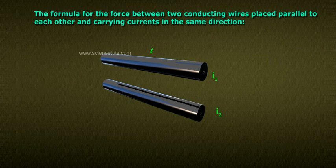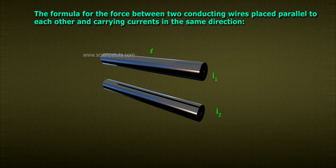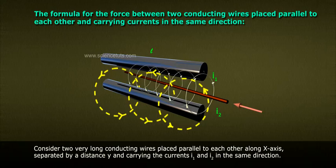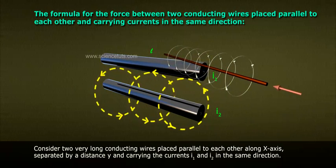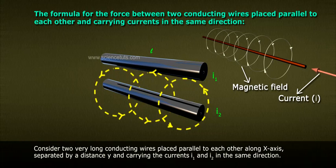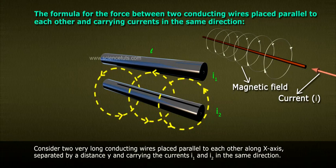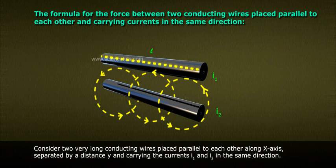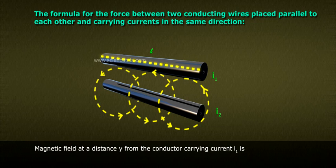The formula for the force between two conducting wires placed parallel to each other and carrying currents in the same direction. Consider two very long conducting wires placed parallel to each other along X axis separated by a distance Y and carrying the currents I1 and I2 in the same direction.